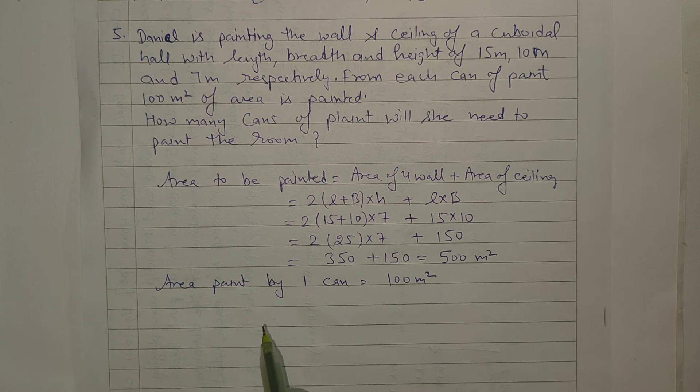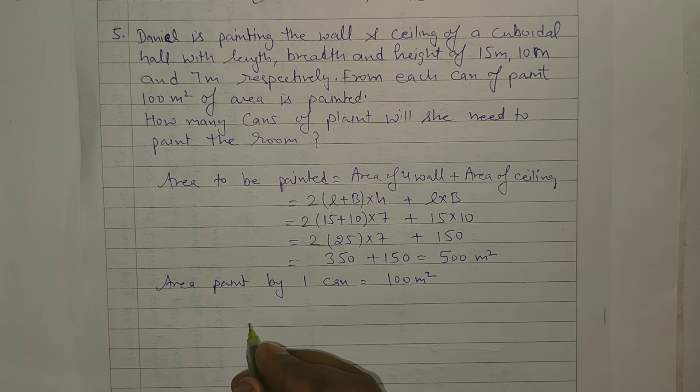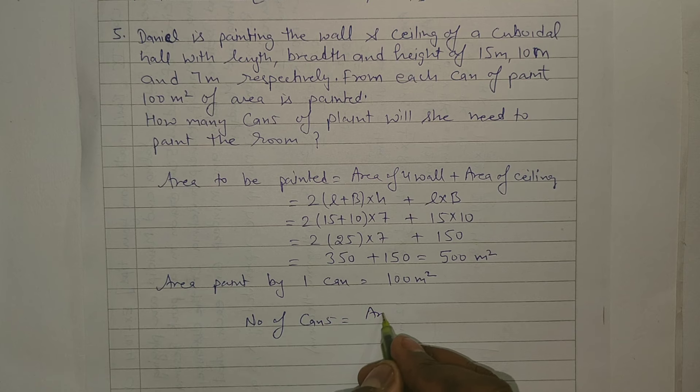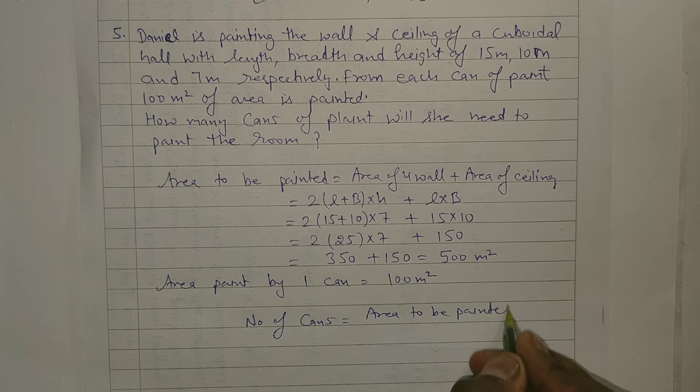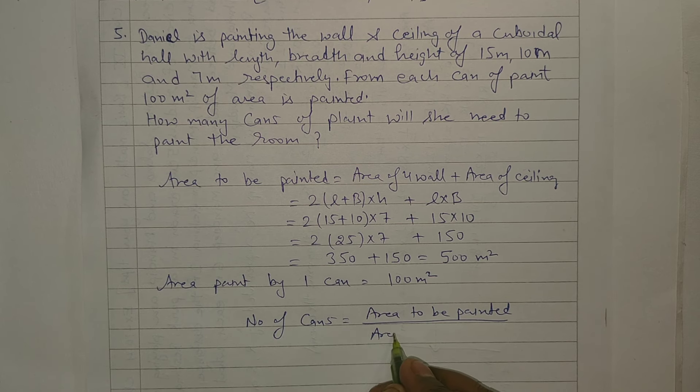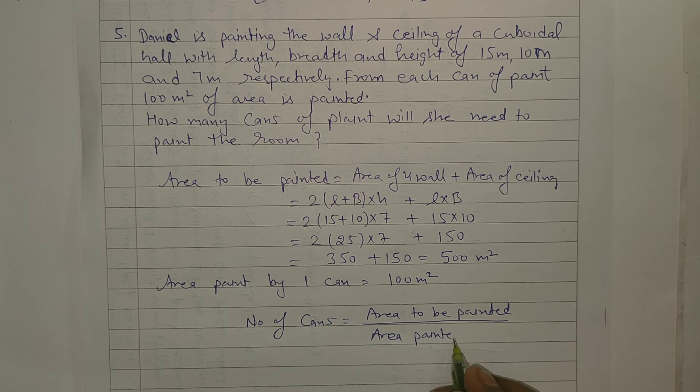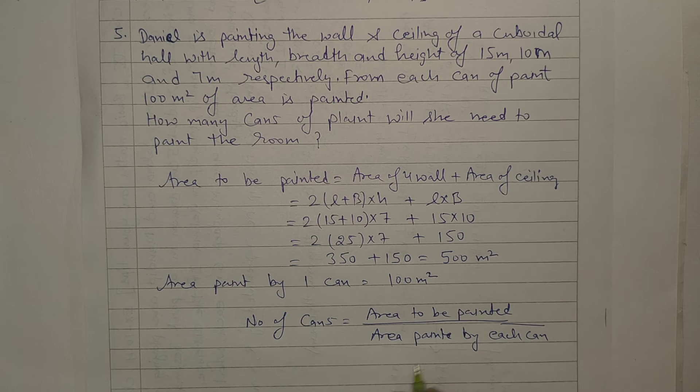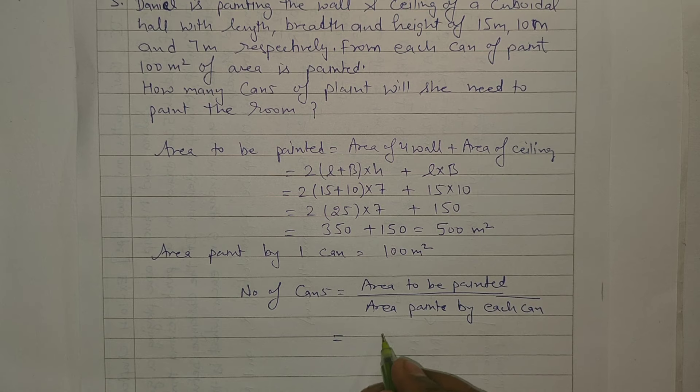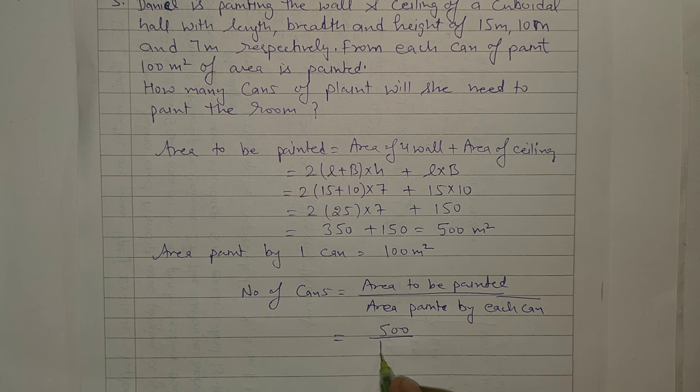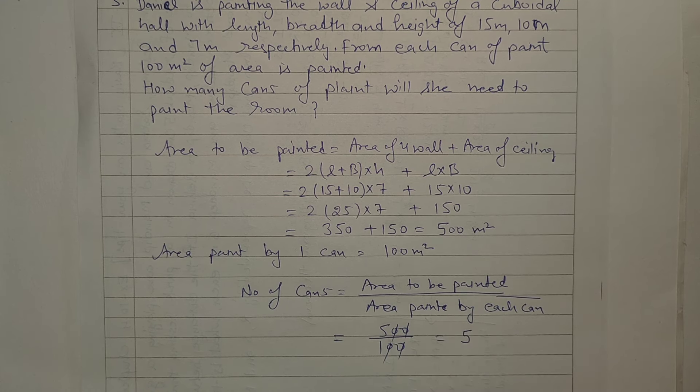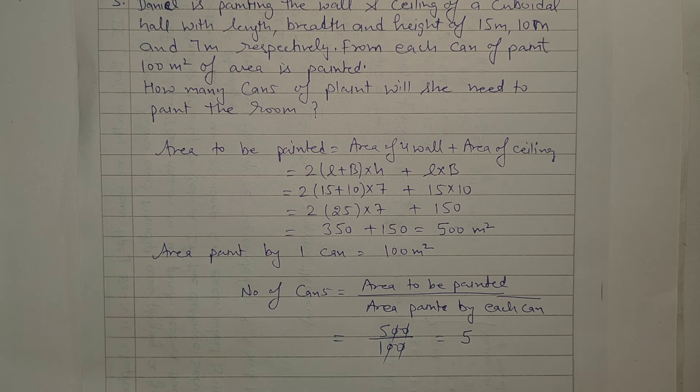Number of cans into area painted per can equals total area to be painted. So number of cans equals 500 divided by 100, which equals 5. It means five cans will be required to paint this area.